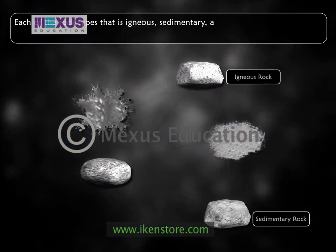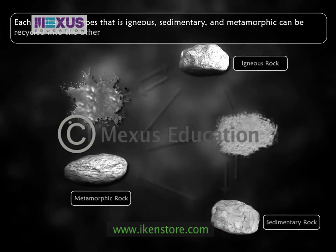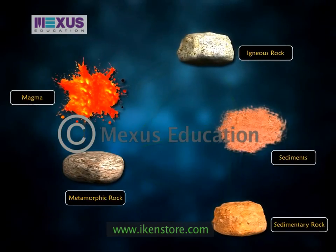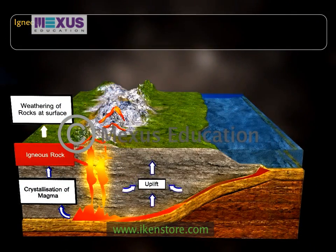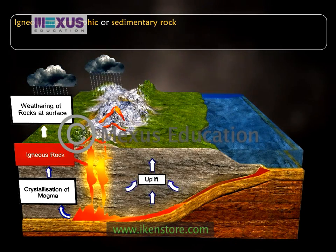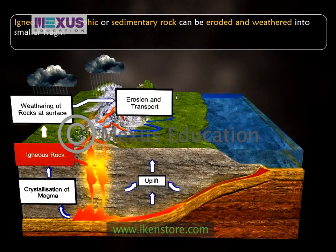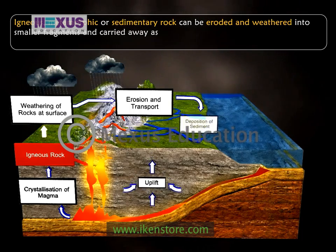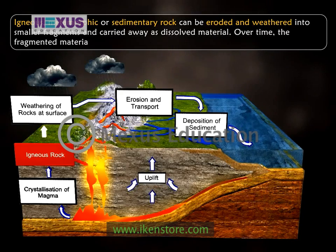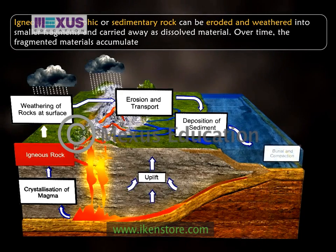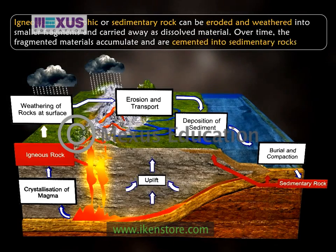Each of the rock types — igneous, sedimentary, and metamorphic — can be recycled into the others. These dynamic transitions occur through geologic time. Igneous, metamorphic, or sedimentary rock can be eroded and weathered down into smaller fragments and carried away as dissolved material. Over time, the fragmented materials accumulate, get buried by additional materials, and are cemented into sedimentary rocks.